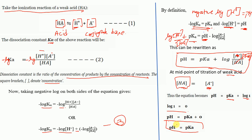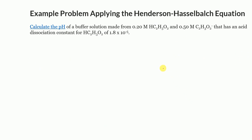Since log(1) = 0, pH = pKa at the midpoint of the titration. This is a key result that can be asked in entrance examinations. Now that we have derived the Henderson-Hasselbalch equation, let's solve a problem: calculate the pH of a buffer solution made from 0.2 M HC₂H₃O₂ and 0.5 M C₂H₃O₂⁻.